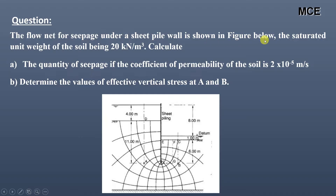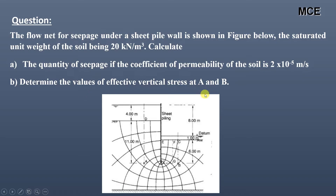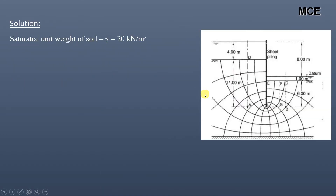The saturated unit weight of soil is 20 kilo Newton per meter cube. Calculate the quantity of seepage given that the coefficient of permeability of the soil is 2×10⁻⁵ meter per second. Also determine the value of effective vertical stress at points A and B.